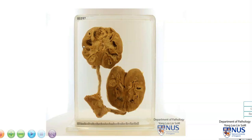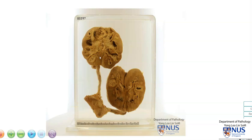Hello, this is a specimen that comprises both kidneys, the ureters, and a small segment of the bladder. You can see that the anatomy is somewhat abnormal here with a very short left ureter. When we look at the cut surface of the kidneys, we can see that the pelvicalyceal system is very abnormal.